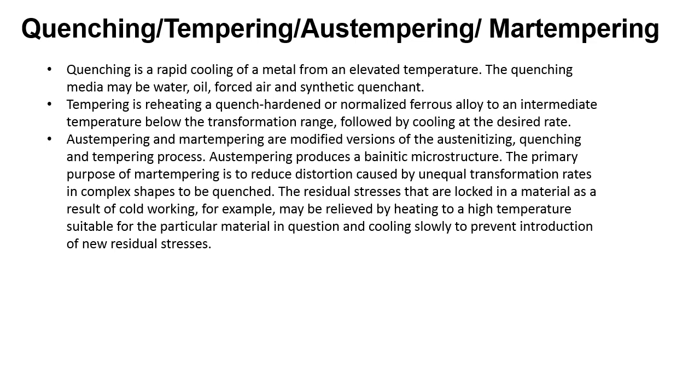Quenching is rapid cooling of metal from an elevated temperature. The quenching media may be water, oil, forced air, or synthetic quenchant. Tempering is reheating a quench-hardened or normalized ferrous alloy to an intermediate temperature below the transformation range, followed by cooling at the desired rate. Austempering and martempering are modified versions of the austenitizing, quenching, and tempering process.